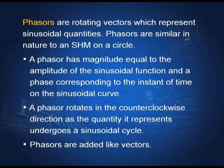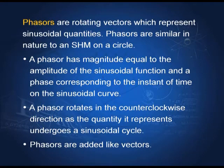To add two quantities which are in different phases, we introduce quantities called phasors, which make this task easy. Phasors are rotating vectors which represent sinusoidal quantities. If you remember from Class 11, simple harmonic motion is represented by a particle on a circle; the amplitude of the circle equals the amplitude of the SHM. Similarly, we introduce phasors in the same way. Phasors act like vectors because they have magnitude and phase instead of direction. When two or more simple harmonic motions are added, their amplitudes add like vectors.